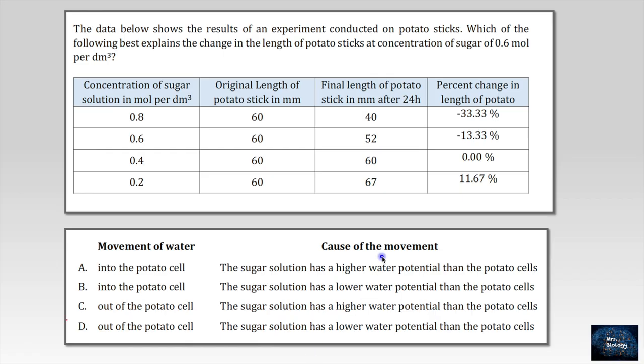Now we can answer the question. We are focusing on this concentration, 0.6, and we can see that the potato length becomes shorter. That means the water left the potato stick. So, choice A and B are wrong because it's talking about the movement of water into potato cells. We can exclude them. Let's move to C and D. Out of the potato cell, the movement of water. That's right. But let's continue the second part. In C, they are telling us that the sugar solution has a higher water potential than the potato cells. What does that mean? That means the water movement should be from the potato cell to the solution, which is wrong. Let's move to choice D. Out of the potato cell. That's right. And the sugar solution has a lower water potential than the potato cells. Also, this is right. That explains how the water lifts the potato stick. That makes it what? Shorter. So, the right choice here is D.